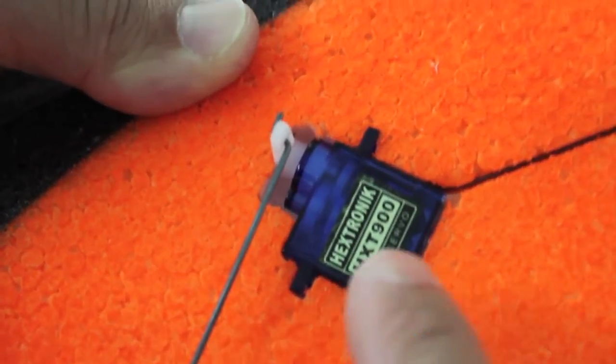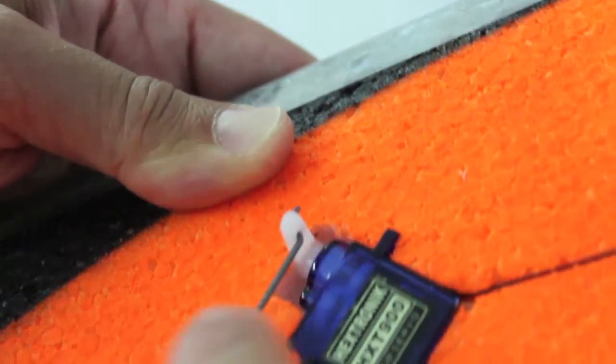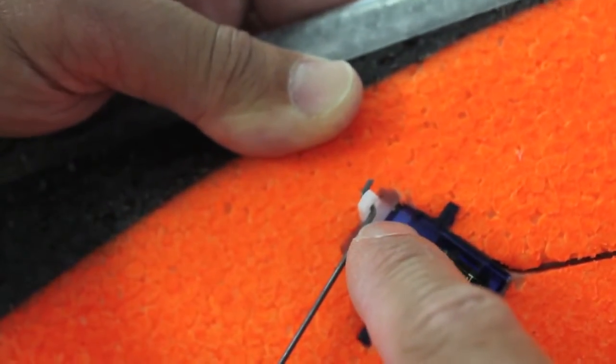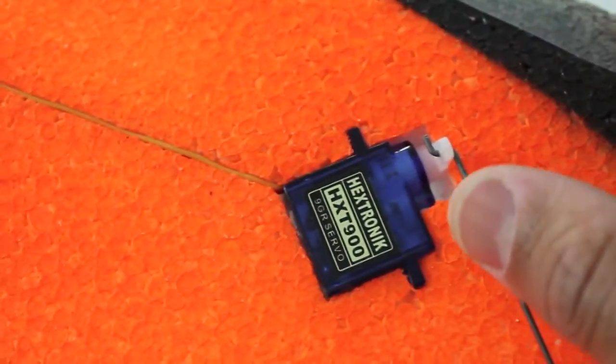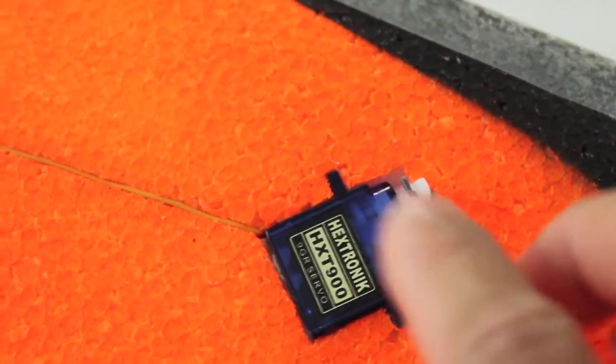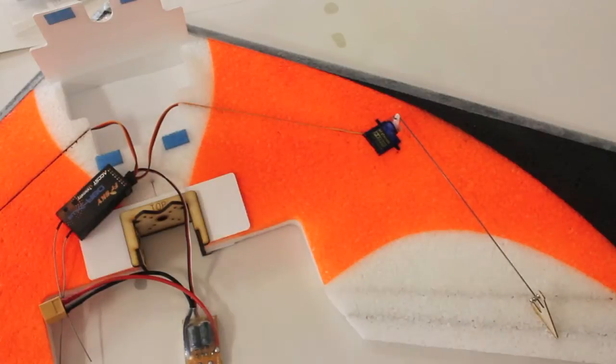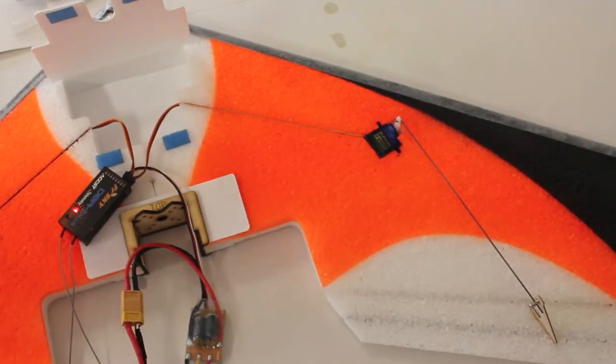Let me point out something before we actually glue our servos into place. On these control horns, you have to drill it out a little bit to get this control rod to fit through there. The instructions recommend a 1/16 inch bit, but I was able to just hammer a little bit and get that pushed through. The other thing we're going to do before we glue these in place is configure the servos, hook them up to a receiver, and make sure that everything is centered.